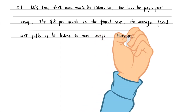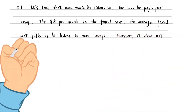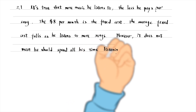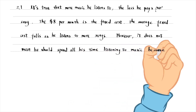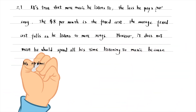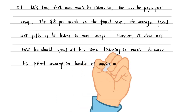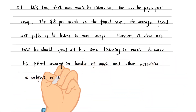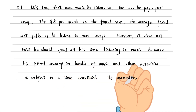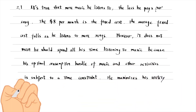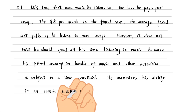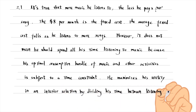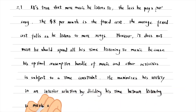However, it does not mean he should spend all his time listening to music, because his optimal consumption bundle of music and other activities is subject to a time constraint. He maximizes his utility in an interior solution by dividing his time between listening to music and doing other activities.